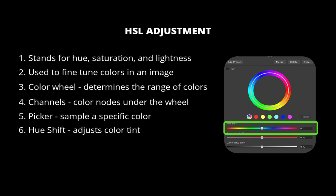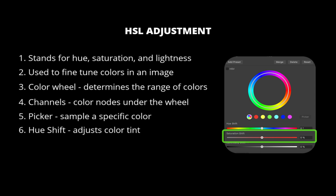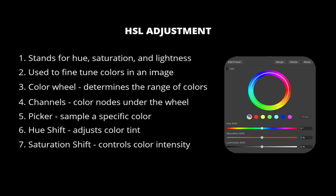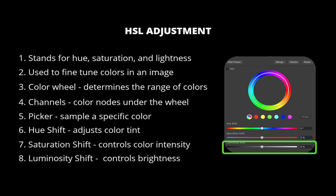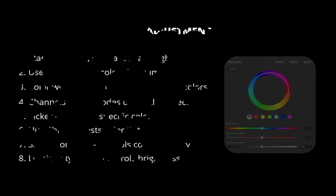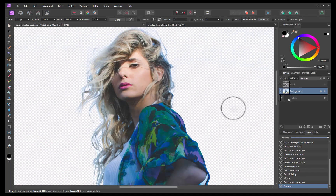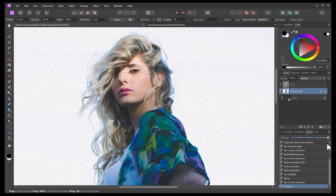The fourth setting is Hue Shift, which controls the color tint of the pixels in the image — drag the slider to shift the colors through the spectrum. The next setting is Saturation Shift, which controls the intensity of the colors in the image. The final setting is Luminosity Shift, which controls the overall brightness of the image. So let's apply the HSL adjustment to reduce the prominence of the color fringe.